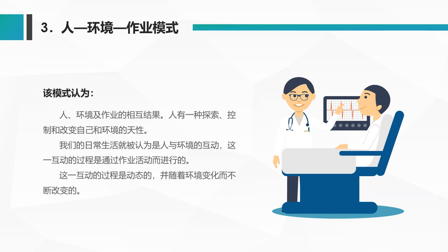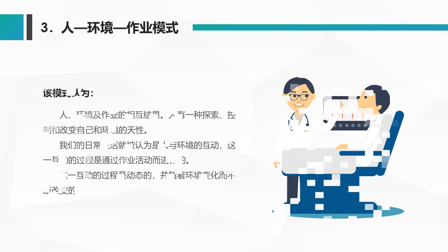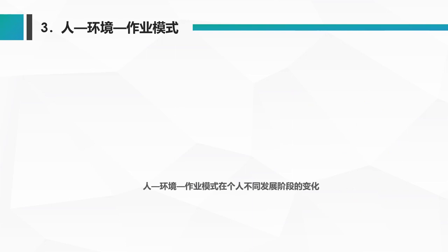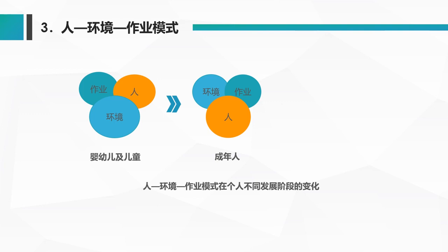第三种，人-环境-作业模式：认为人和环境和作业是相互作用、相互影响的。人有探索和控制自己环境的天性，日常生活中人和环境是互动的，这个互动过程是通过作业活动来进行的。人在不同时期，作业、环境与人的关系是不一样的。例如婴幼儿时期环境对其影响较大；到成年人时人已有自主能力，人的比例较大；到老年人时又以环境为主。